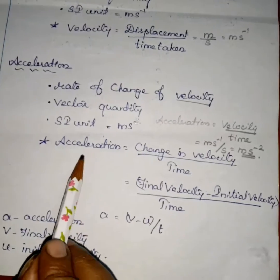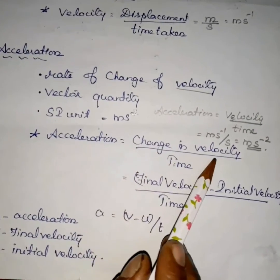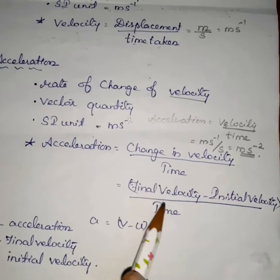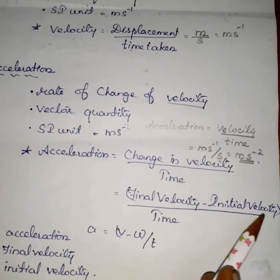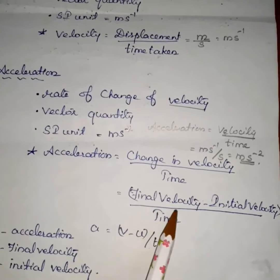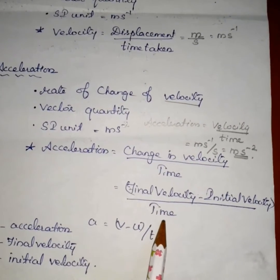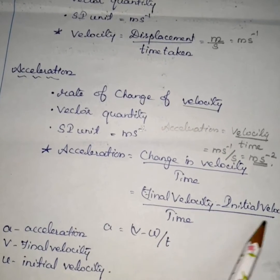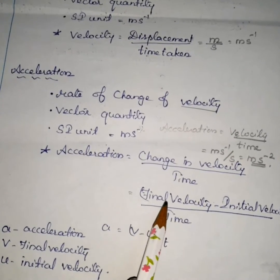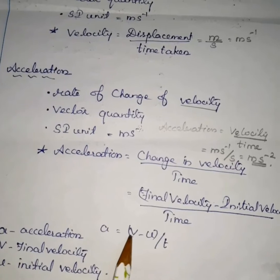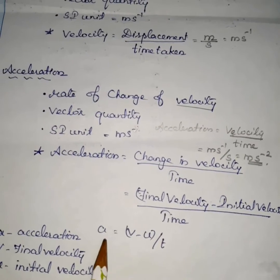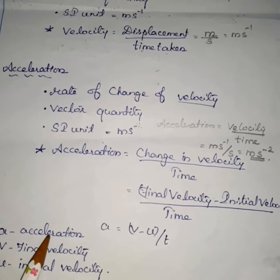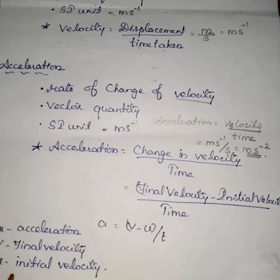What is the formula? Acceleration is equal to change in velocity by time, that is final velocity minus initial velocity divided by time. The final velocity is denoted by V and initial velocity by U. So the formula is A equals V minus U divided by T, where A is acceleration, V is final velocity, and U is initial velocity.